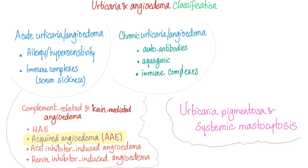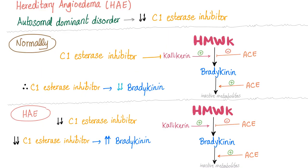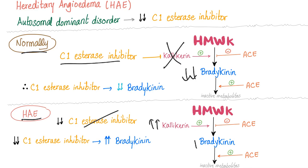There are different types of angioedema. We are talking here about the complement-related and kinin-mediated angioedema. We have talked about hereditary angioedema in the previous video; today it's acquired angioedema. Quick review of hereditary angioedema: normally, we have C1-esterase inhibitor inhibiting kallikrein, leading to no secretion of bradykinin. However, in hereditary angioedema, there is no C1-esterase inhibitor, so kallikrein is left uninhibited, converting high molecular weight kininogen into lots of bradykinin, causing symptoms.